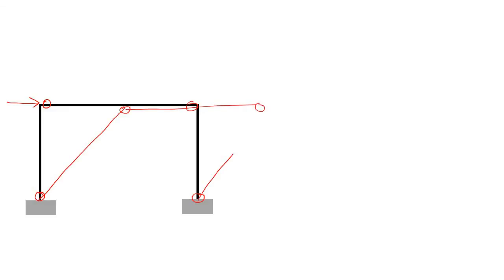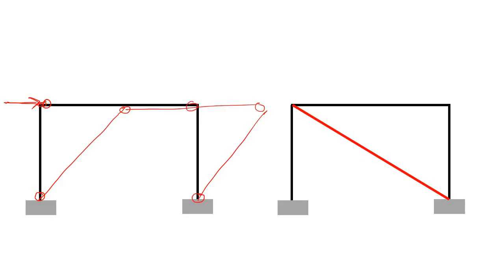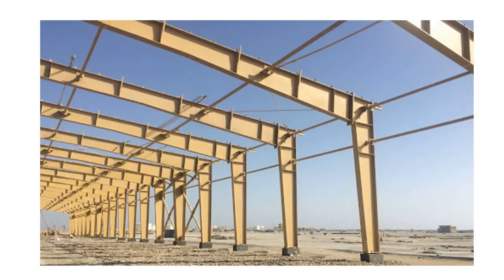With all joints pinned and the base also effectively pinned, any lateral load will cause the frame to form a mechanism and collapse — it is unstable. To make it stable, the solution is to provide a bracing. With bracing, any lateral load will go directly to the foundation through the brace without disturbing the columns or the frame. Therefore, whenever you use a wide flange or I-section as a column member, you can only provide a moment connection in the transverse direction; for the longitudinal direction, bracing is a must.